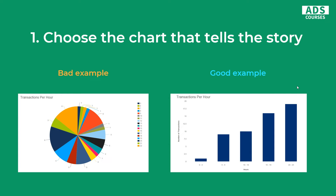Another example of telling a story with your charts: we've got actually the same story in both examples. With the bad example we use the pie chart, which is not the best option for this story to tell — we even have a legend, but it doesn't make it clear. On the right, we've got a better example of visualizing the same story using the bar chart. These are transactions per hour and we split the hours into groups, and we can easily tell that from 8pm to 11pm we generate the most transactions. Same story, same data, but visualized differently.